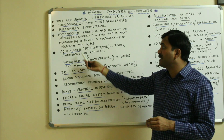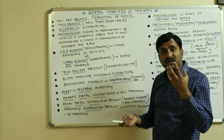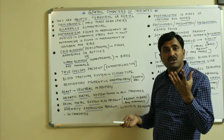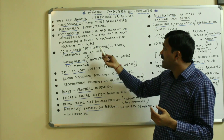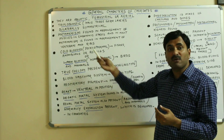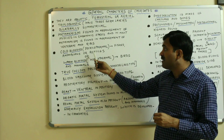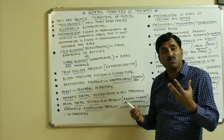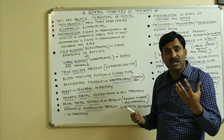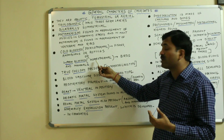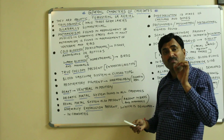Chordates may be cold-blooded or warm-blooded. Cold-blooded means they do not have the tendency to keep their body temperature constant — it changes according to the ambient environment. They are also called poikilothermal. Examples of cold-blooded animals are fishes, amphibians, and reptiles. Warm-blooded means they maintain a constant body temperature and are called homeothermal. Examples are birds and mammals.